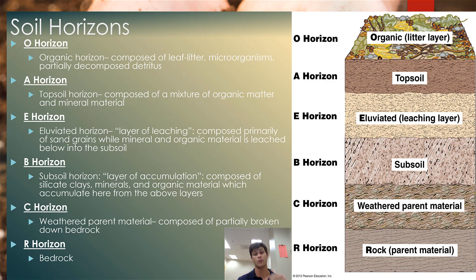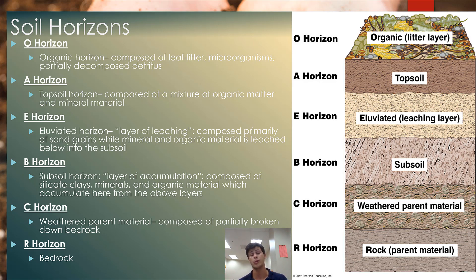The B-horizon is your zone of accumulation. All the nutrients removed from the E-horizon have now been deposited in the subsoil. This is where deeper nutrients reside, moved downward by water. Finally, the C-horizon is partially decomposed bedrock — large chunks of rock — and the R-horizon is straight parent material, just solid rock. You need to know all six of these horizons and what they consist of.